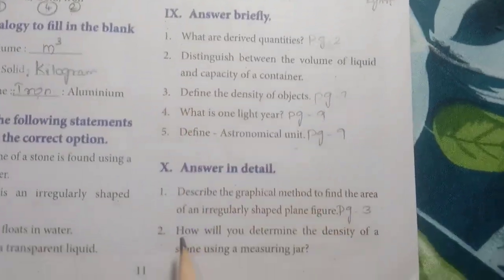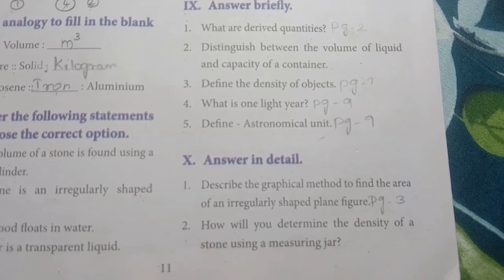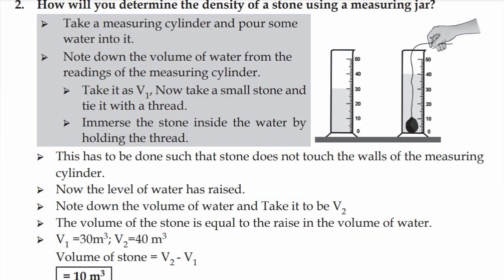Second detail question: how will you determine the density of a stone using a measuring jar? Take a measuring cylinder and pour some water into it. Note down the volume of water from the readings of the measuring cylinder.